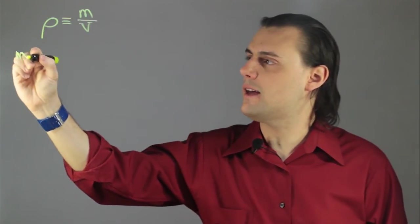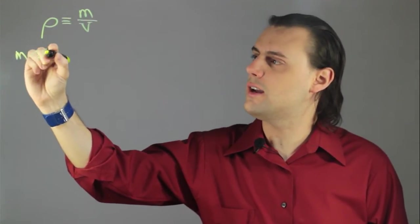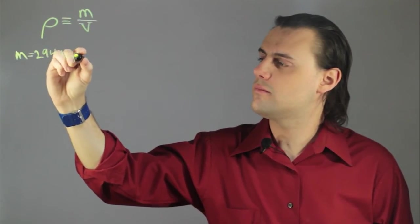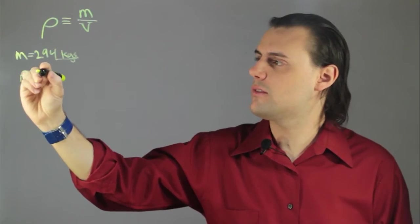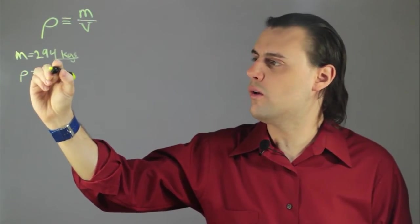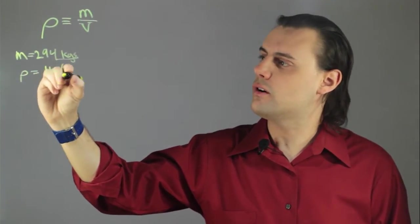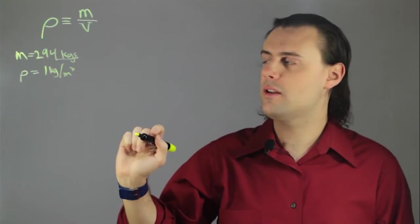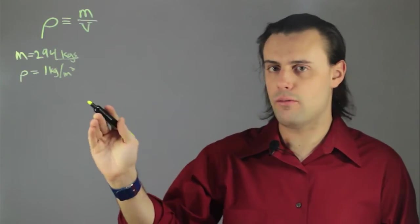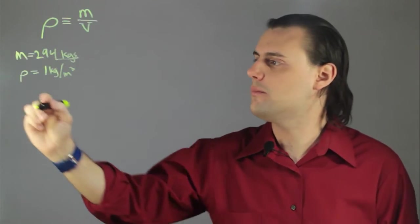If we have a mass of 294 kilograms, and we're given a density rho equal to 1 kilogram per meters cubed, then we can determine what the volume is, and that would be in units of meters cubed.